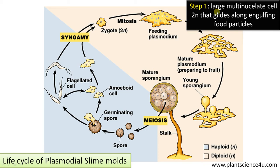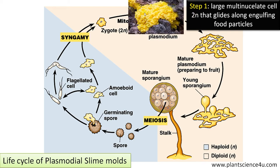Step 1: The large multinucleate cell, which is called the plasmodium. As you can see, many nuclei in a common protoplasm can be called a supercell that is diploid. It moves around dead, decayed wood, leaves, etc., engulfing food particles including bacteria. This is the young feeding plasmodium that moves around and engulfs food particles.